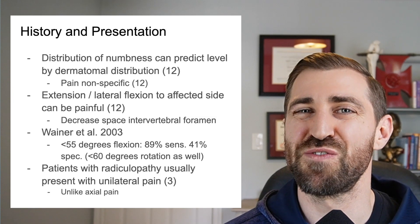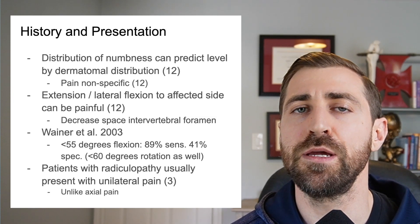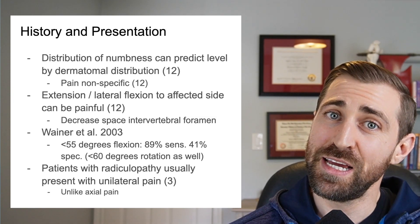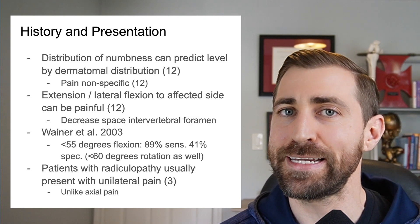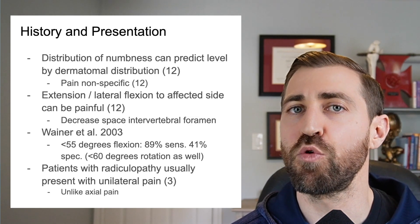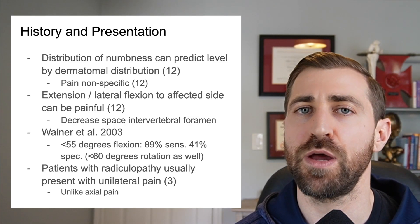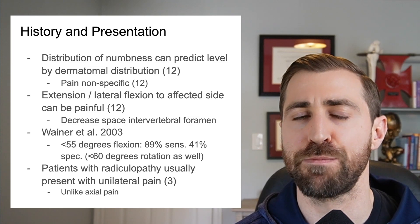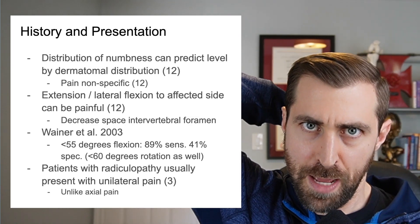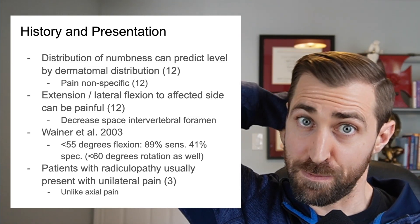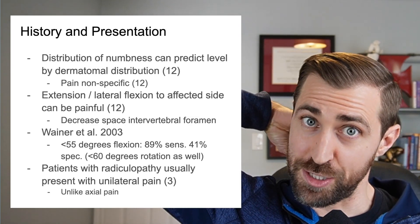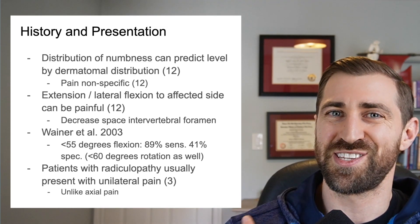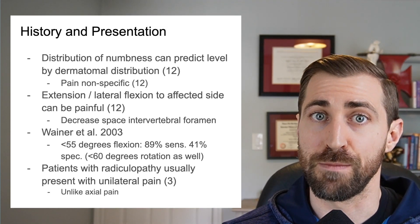Extension, lateral flexion, and ipsilateral cervical rotation may be particularly painful because all those motions tend to decrease the intervertebral foraminal space. Patients with cervical radiculopathy also tend to have pain on one side — unique to other forms of neck pain. If you have more mechanical axial neck pain, the pain is usually more bilateral, symmetric, and central. With cervical radiculopathy, it's usually to one side and down the arm.